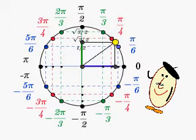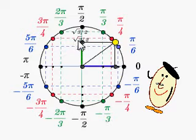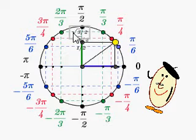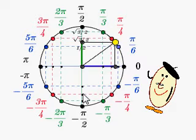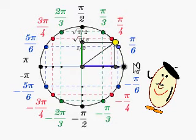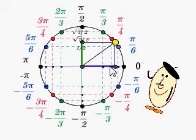And now, three important values: 1 over 2, square root of 2 over 2, and square root of 3 over 2. You find these values on the y-axis, but also below with negative 1 over 2, negative square root of 2 over 2, and negative square root of 3 over 2. And with this circle, we have the same on the x-axis — the positive values: 1 over 2, square root of 2 over 2, and square root of 3 over 2.